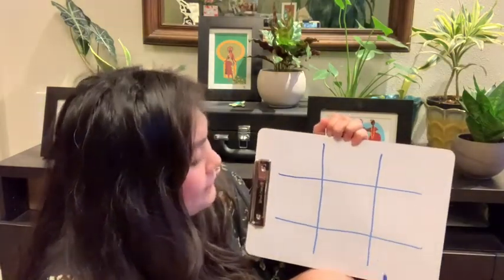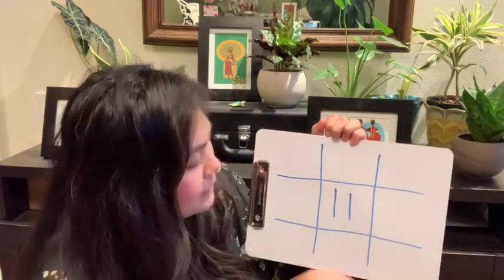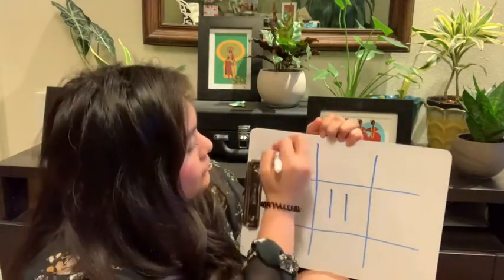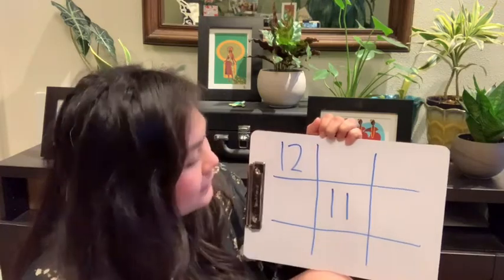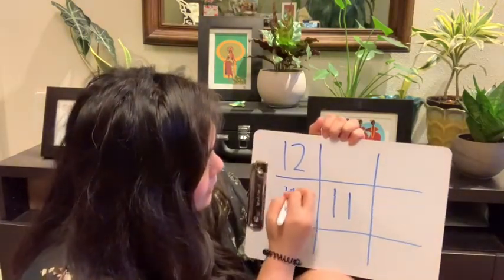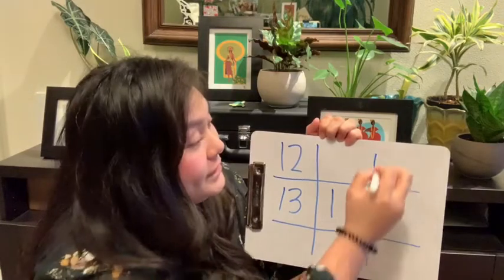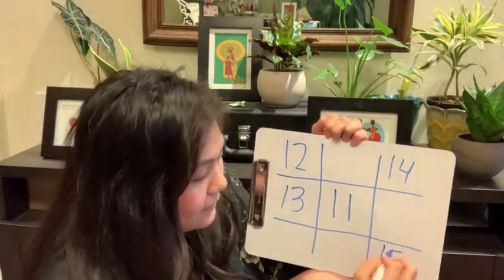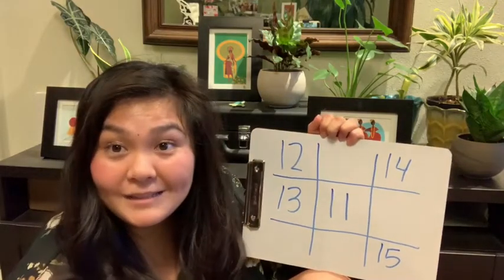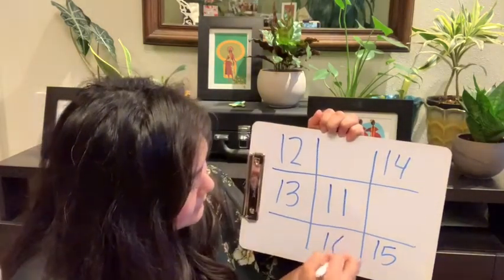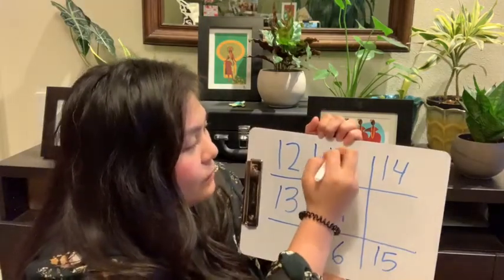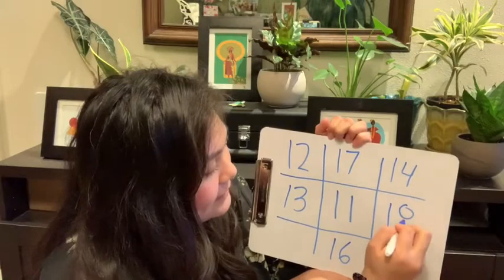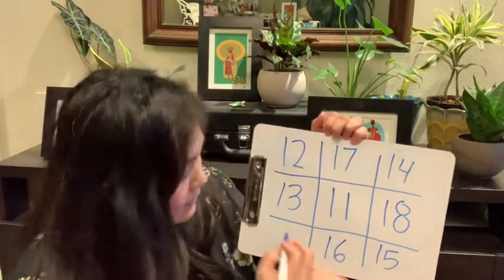The first number is 11 — a 1 and a 1. The next number is 12, a 1 and a 2. The next number is 13, a 1 and a 3. The next number is 14, a 1 and a 4. The next number is 15, a 1 and a 5. The next number is 16, a 1 and a 6. The next number is 17, a 1 and a 7. The next number is 18, a 1 and an 8. And our last number is 19, a 1 and a 9.